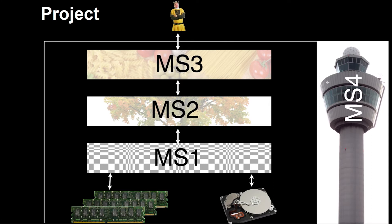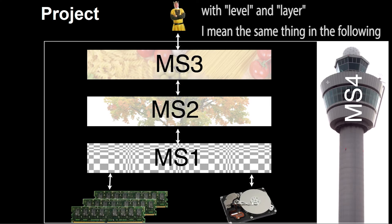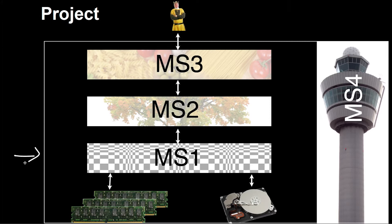So how does a project structure look like? The project is designed along the different levels in the database system. Milestone 1 is about the data store — you have to develop a data store. Milestone 2 is about the indexer. Milestone 3 is about the query optimizer. Milestone 4 is about the controlling component.